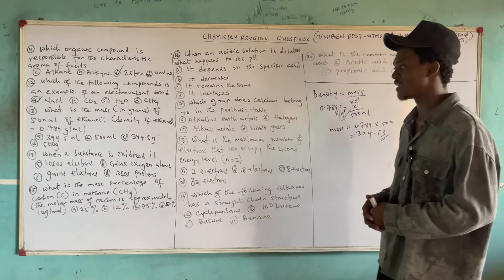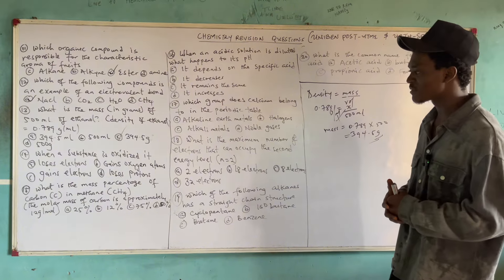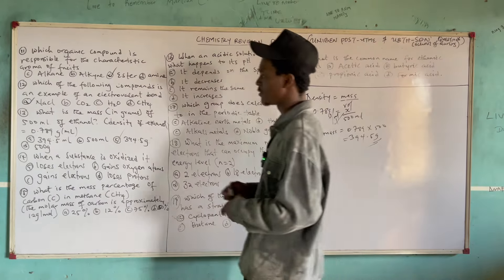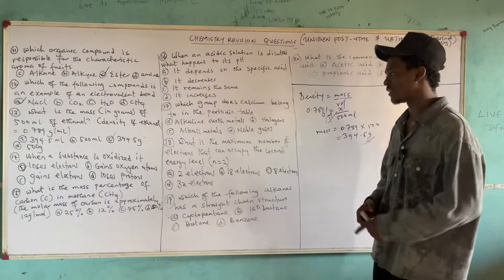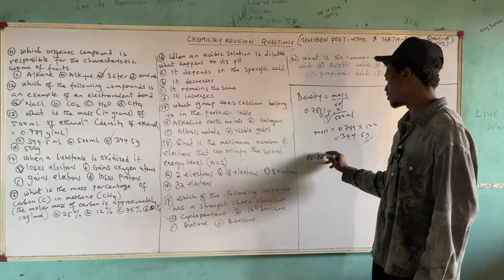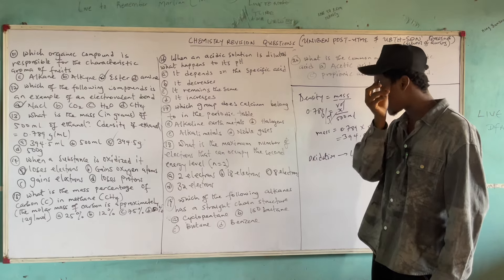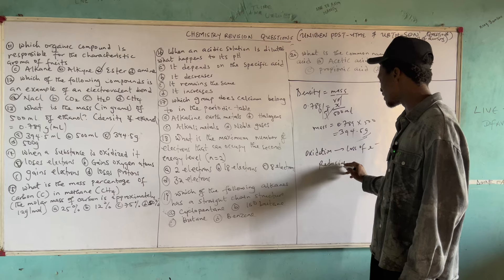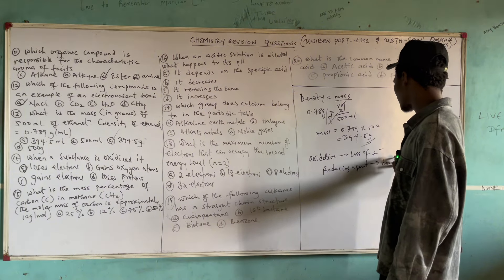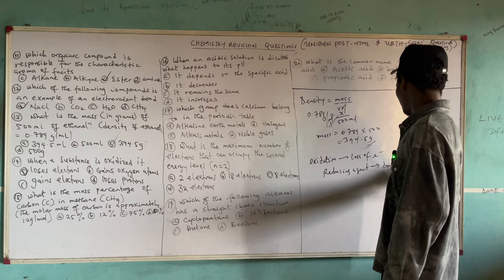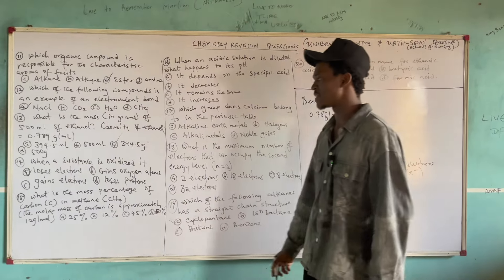Question 14: When a substance is oxidized, it (A) loses electrons, (B) gains oxygen atoms, (C) gains electrons, or (D) loses protons. The answer is A — loses electrons. A substance that is oxidized undergoes oxidation, and oxidation is loss of electrons (OIL RIG). A substance that is oxidized is called the reducing agent, because reducing agents donate electrons — they are electron donors.